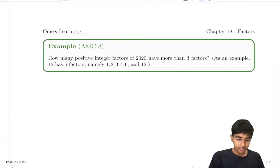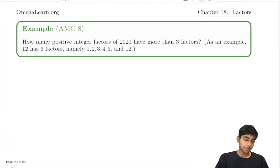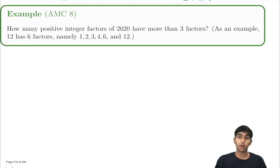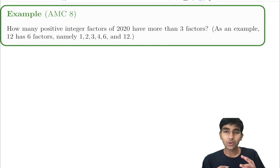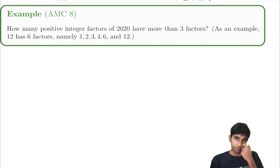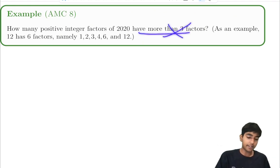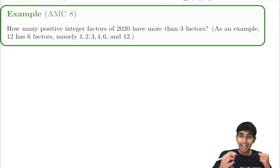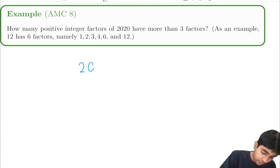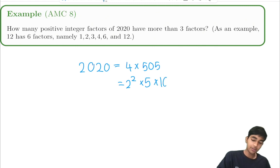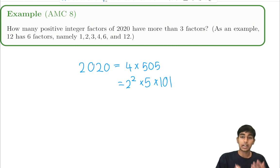Let's look at this cool example from the AMC 8: How many positive integer factors of 2020 have more than 3 factors? To start, let's find the prime factorization of 2020. 2020 equals 4 times 505, where 4 is 2 squared and 505 is 5 times 101, and 101 is prime. So 2020 = 2 squared times 5 times 101.